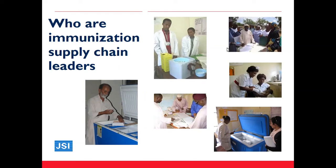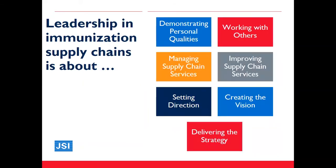Let's take a few minutes to look at the activities and responsibilities of immunization supply chain leaders. Leadership in immunization supply chain is about these seven activities: demonstrating personal qualities as a role model to your team; working with others within your team and with external stakeholders who contribute to the success of your immunization program; managing supply chain services and continuously assessing and improving performance; setting the direction of the supply chain; and working with the immunization supply chain team to create a vision and develop and implement strategy.